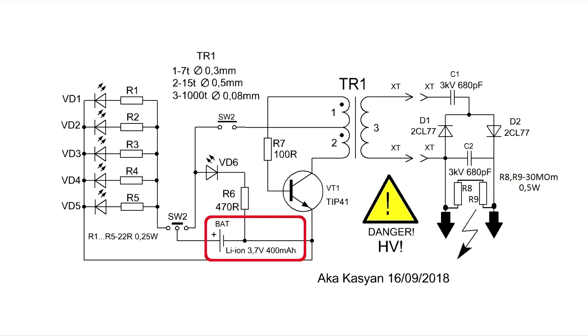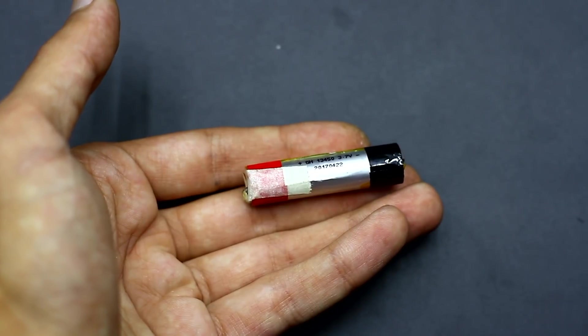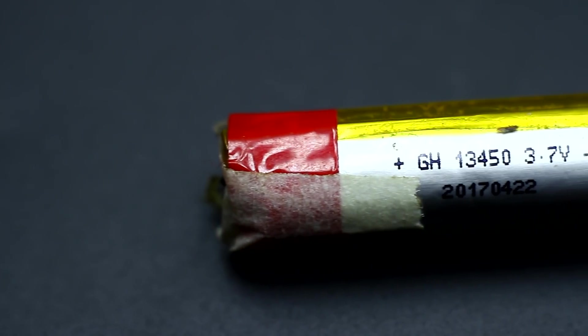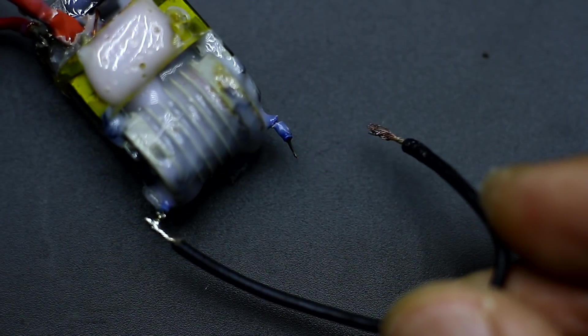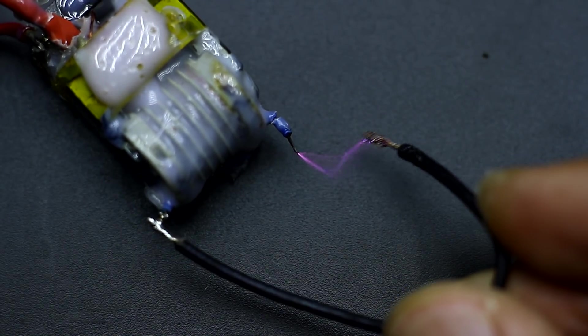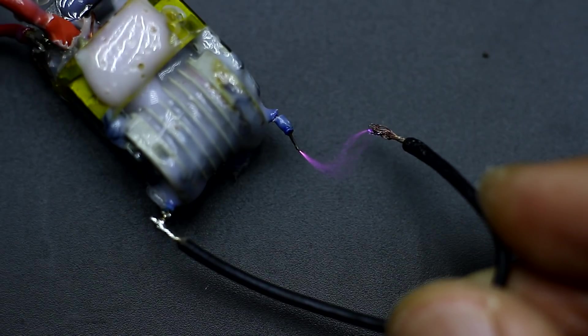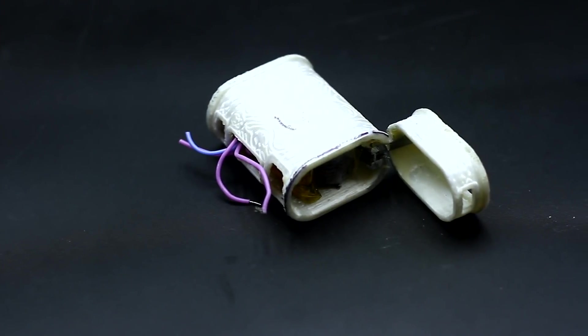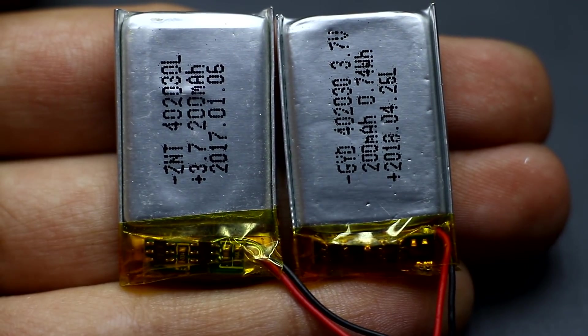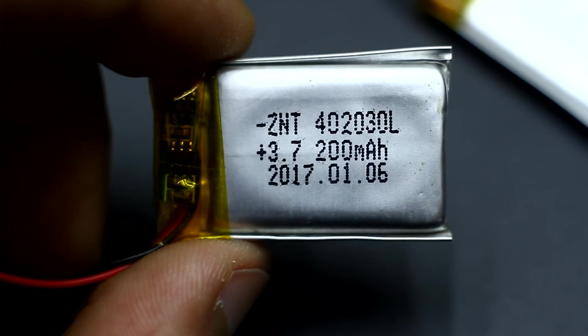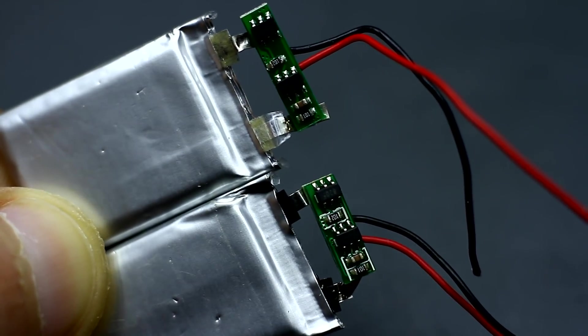There are many options of power source. Initially, I wanted to use a lithium battery from an electronic cigarette because they are high current type. The converter circuit, about which we will talk later, devours a current of up to 1.5 Ah from the battery. But in the end, due to the size of the case, it was decided to use a pair of parallelly connected lithium ion batteries with a capacity of 200 mAh each.